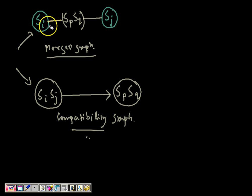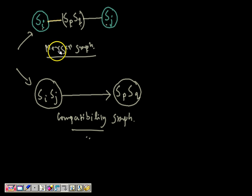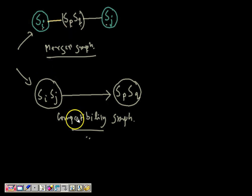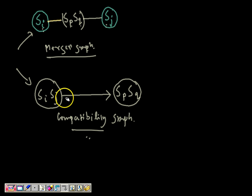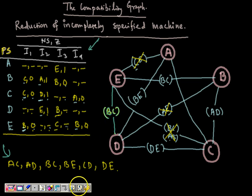So again, Si and Sj is compatible if Sp and Sq are compatible. Sp, Sq is called the implied pair. Si, Sj is the compatible pair if the implied pair is also compatible. In the compatibility graph, we write Si, Sj as a vertex with a directed arc to Sp, Sq. Now for the given machine, we are about to develop the compatibility graph.